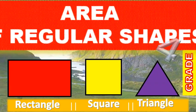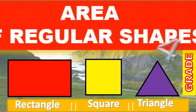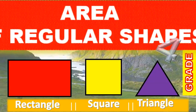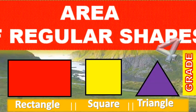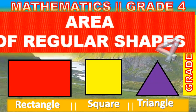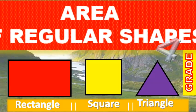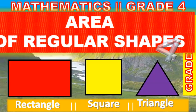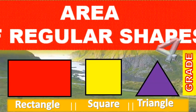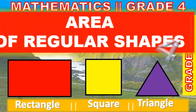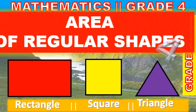How do we calculate the perimeter of regular and irregular shapes? To calculate the perimeter of regular and irregular shapes, we add all the sides together.